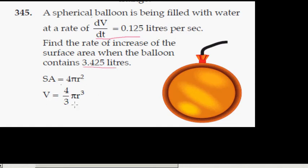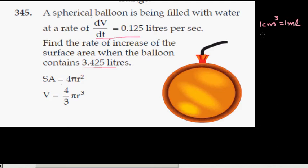These are the two formulas that are required. One thing to understand is the surface area is going to be in centimeter squared or meter squared, and volume is also in centimeter squared or meter squared — but here, the given rate is in liters. Centimeter squared and liters are not compatible, so you should know this fact: one centimeter cubed is equal to one milliliter, and one thousand milliliters is one liter.